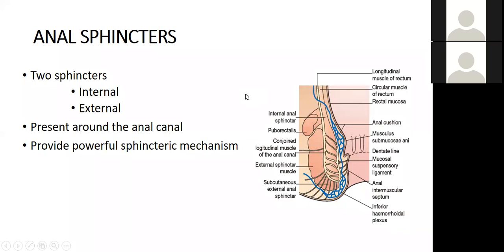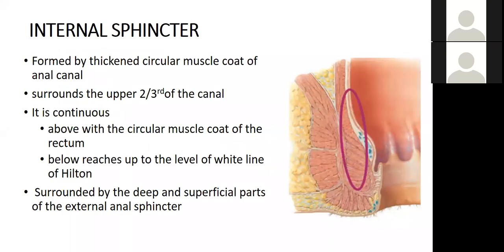The anal sphincters — the external and internal anal sphincters — surround the anal canal and provide a powerful sphincteric mechanism. The internal anal sphincter is an involuntary muscle. It starts where the rectum passes through the pelvic diaphragm and ends above the anal orifice.